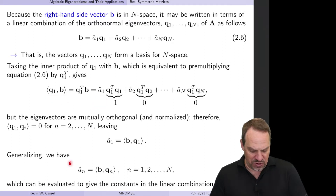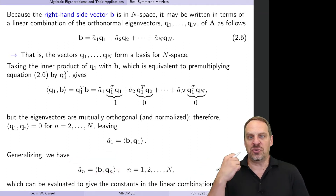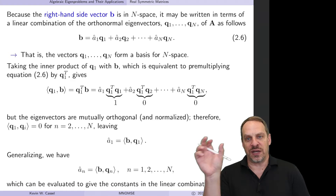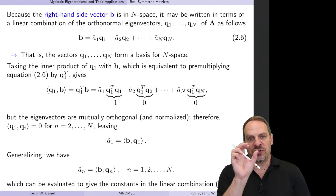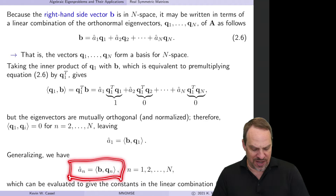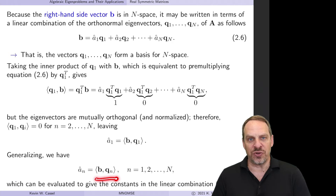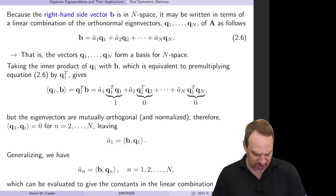That's true for all of the others as well. Taking the inner product with Q2, with Q3, isolates each individual constant. In general, An-hat is simply the inner product of B with the corresponding orthonormal eigenvector Qn.